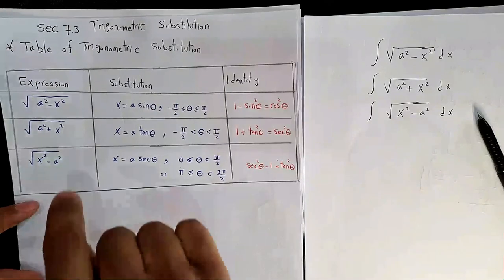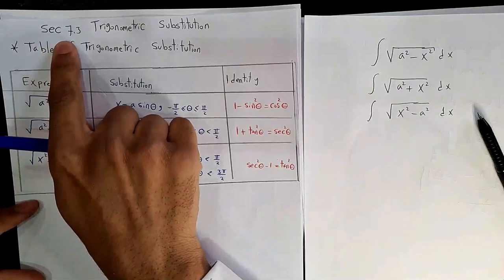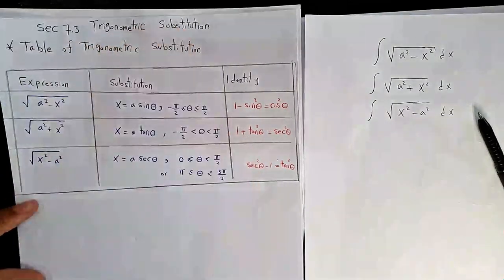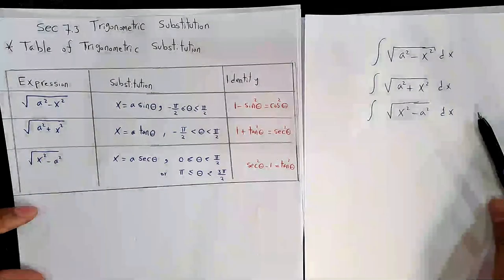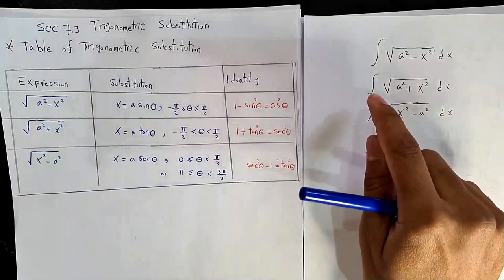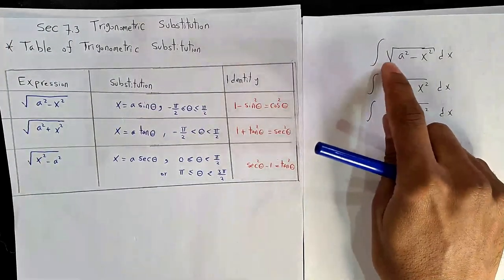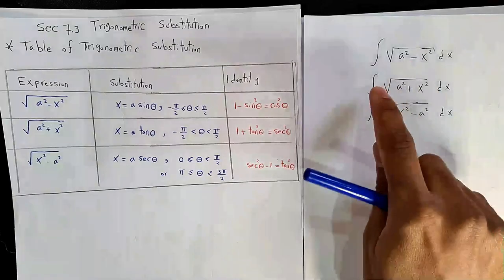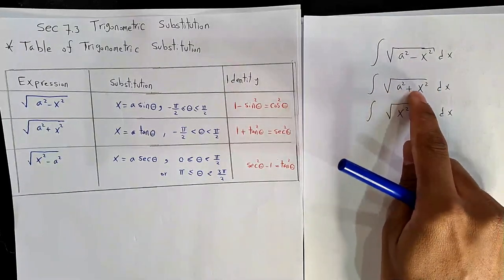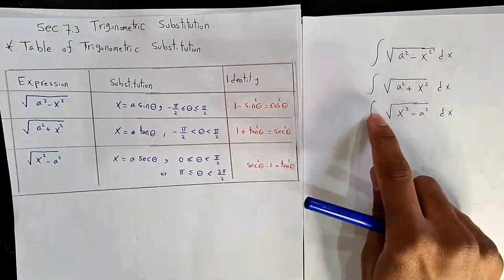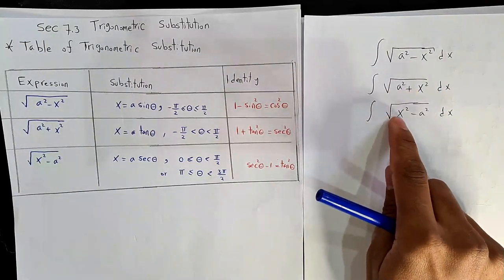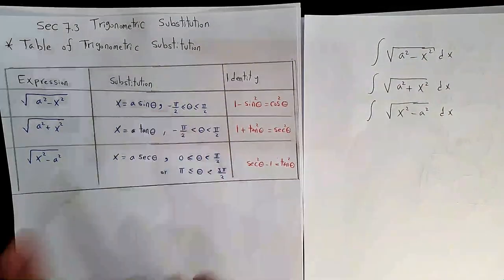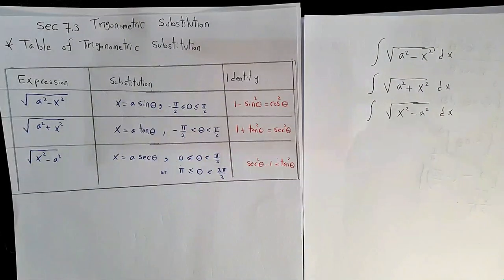As-salamu alaykum. Today we will talk about section 7.3, which is about trigonometric substitution. In this section we will treat a special class of functions: the integral of root(a²-x²), integral of root(a²+x²), and integral of root(x²-a²). Each one has a corresponding substitution.